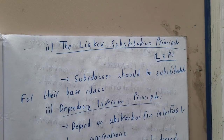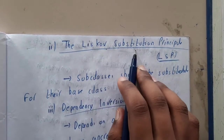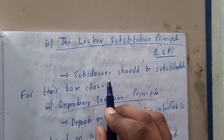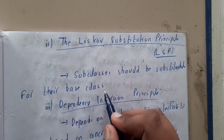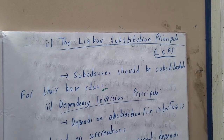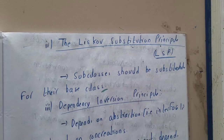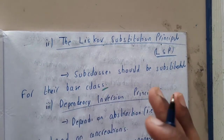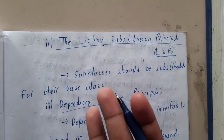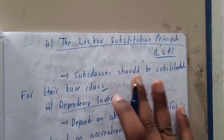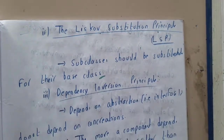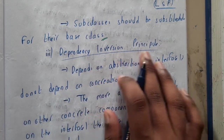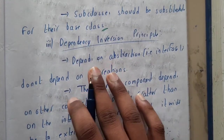The second principle is the Liskov Substitution Principle. Subclasses should be substitutable for their base classes. If there is a subclass of some main class, the subclass should represent all the characteristics of the main class, or it can be a replica or a replacement for it. This is what the Liskov Substitution Principle, popularly called LSP, states.